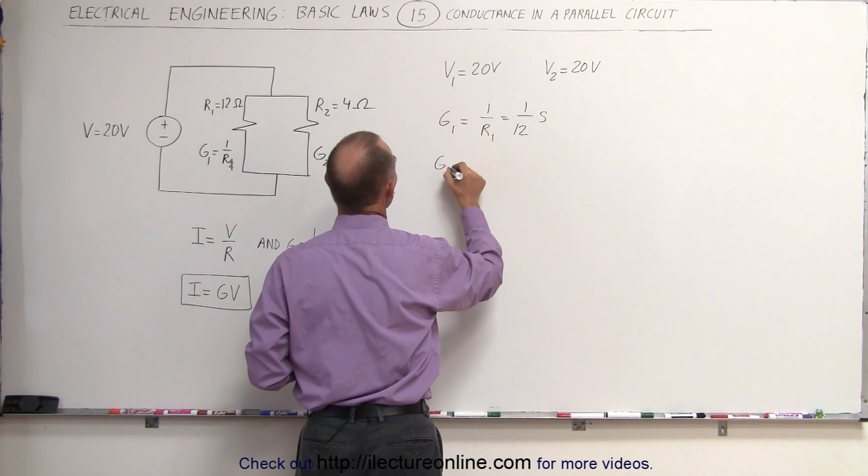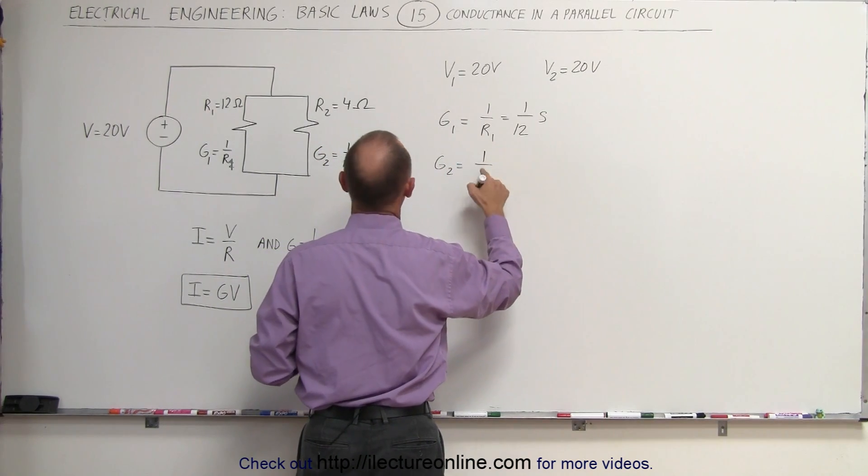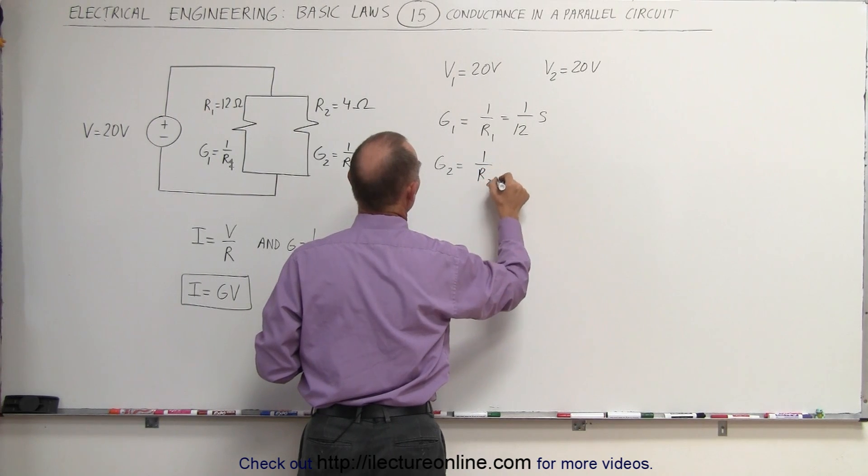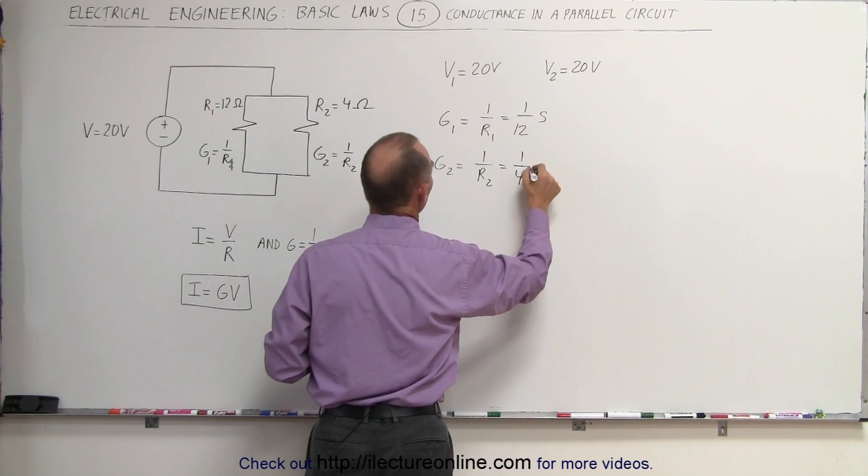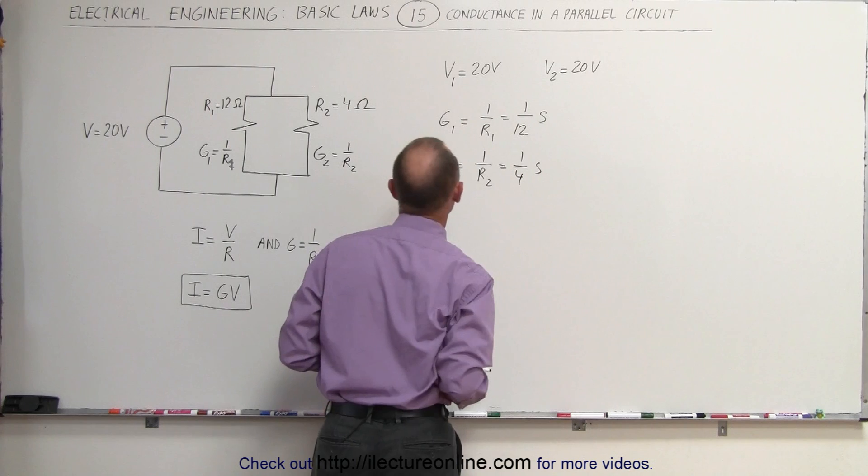And G2 is equal to 1 over R2. And R2 is 4 ohms, so it's 1 over 4 Siemens. So those are the two conductances.